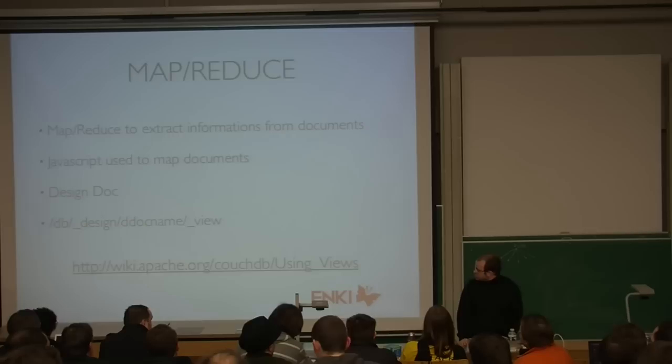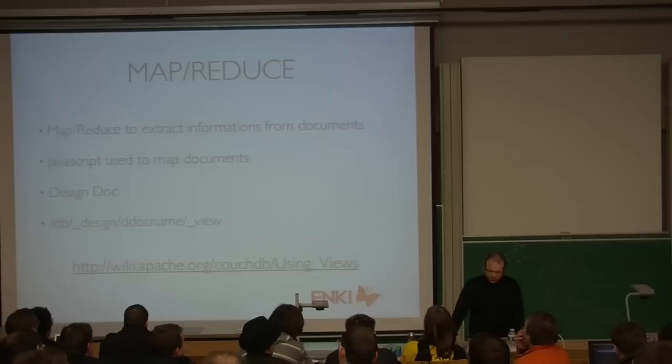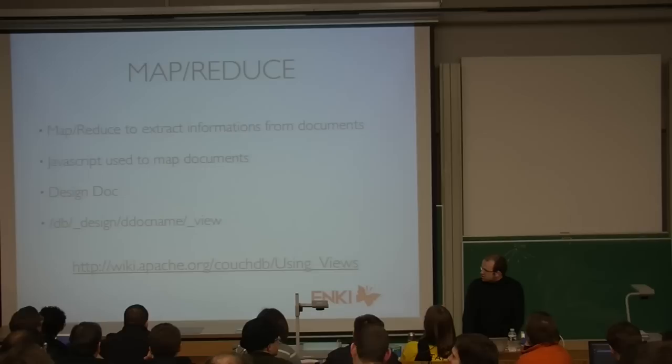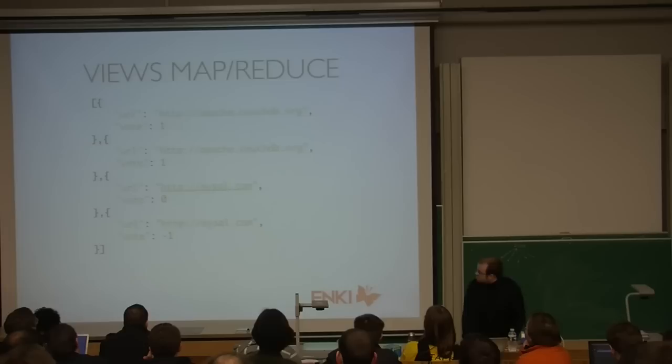This is similar to LotusNotes where you have design documents to create specific views of your data. When you want to query CouchDB, you query it on a specific URL for the view. A view can be a map or a map plus reduce. It's available at a specific URL, and every action on CouchDB for views will be behind the design doc namespace.